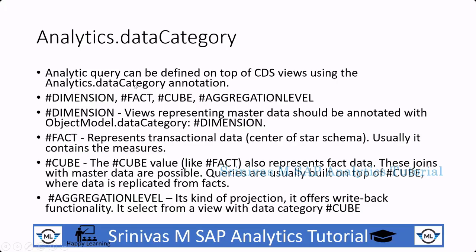When coming to analytics annotations, one of the important ones is analytics data category. When creating a CDS view, we need to mention using this analytics tag what kind of data the CDS view is representing — whether it is master data, transactional data, or a data of type cube which follows a star schema. Master data is mentioned as a dimension, transactional data as a fact, and star schema kind of datasets use a cube type analytical data category. Aggregation level is for planning functionality, discussed in later sessions.